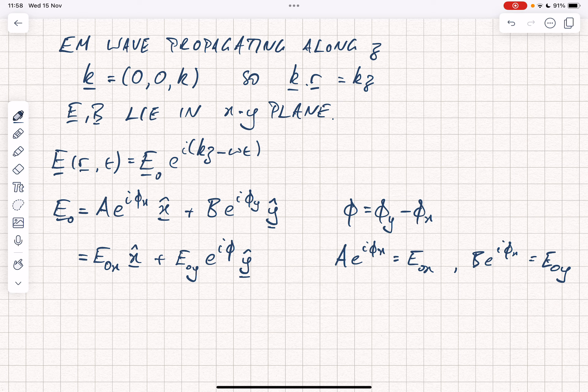There's nothing special about phi x, we could have taken phi y out. The only thing that matters is the phase difference between the two. If we'd taken e to the i phi y out, then we would have a factor of e to the minus i phi applied to the x component and nothing applied to the y component.